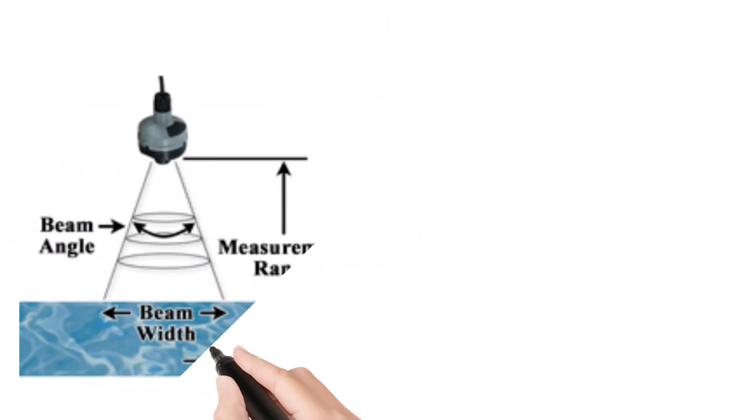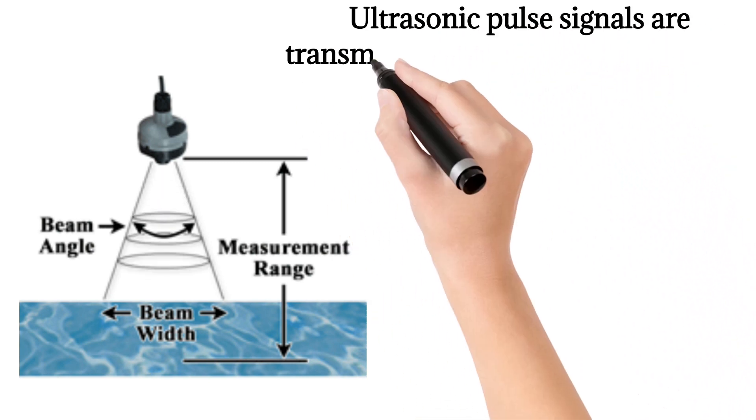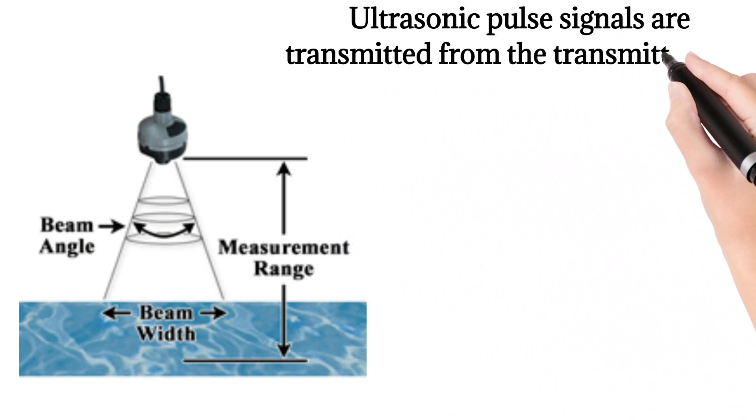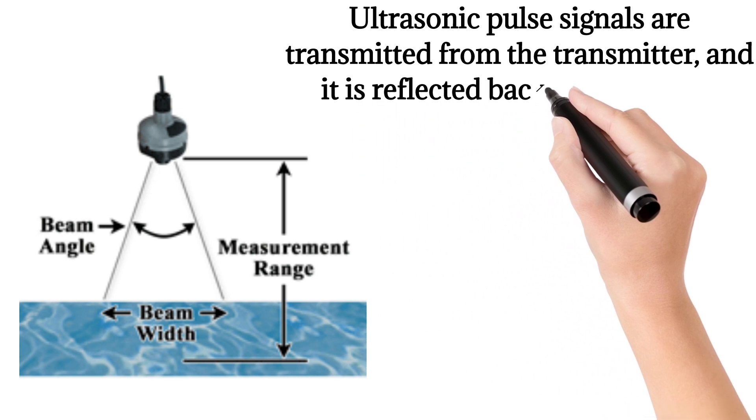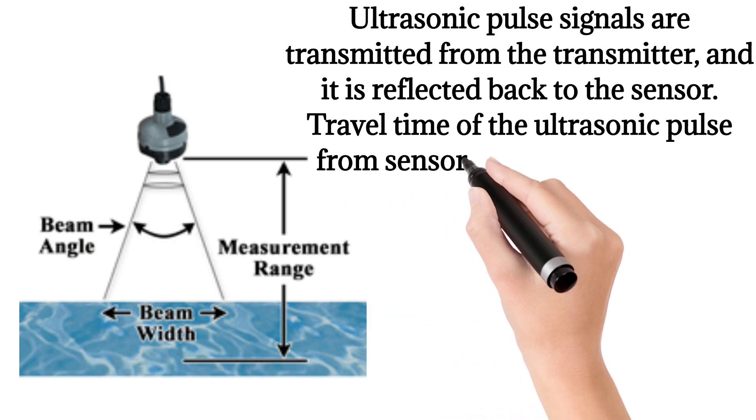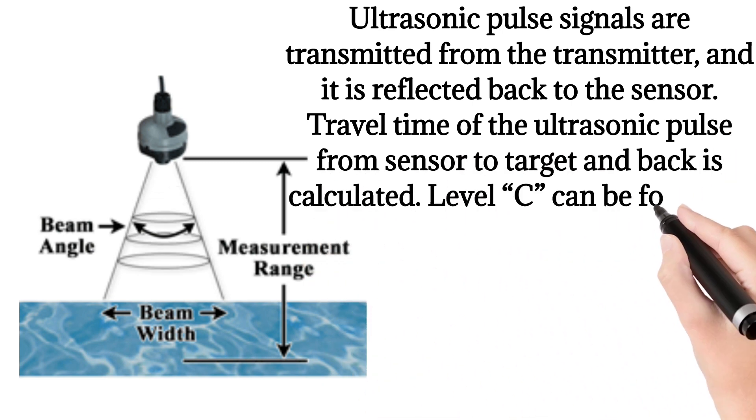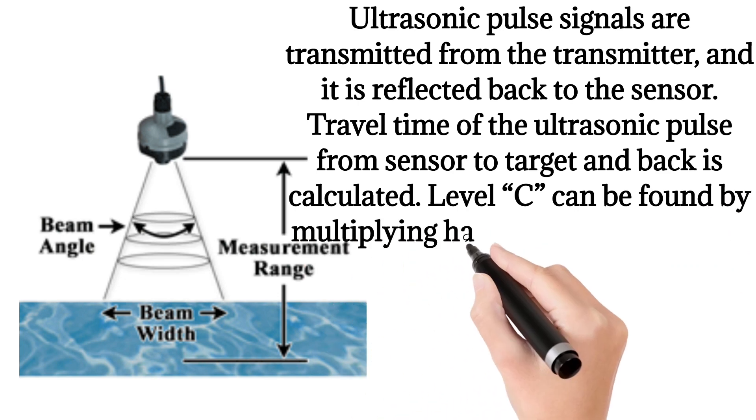Ultrasonic pulse signals are transmitted from the transmitter and reflected back to the sensor. Travel time of the ultrasonic pulse from sensor to target and back is calculated. Level C can be found by multiplying half of this time with the speed of sound in air.